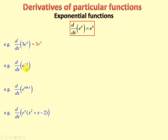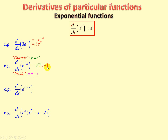The next one: e to the minus x. There we have a composite function. Outside function: y equals e to the u. Inside function: u equals negative x. When we differentiate the outside function, we keep e to the negative x as it is, then multiply by the derivative of the inside function, negative x, which is negative 1. This simplifies to negative e to the negative x.